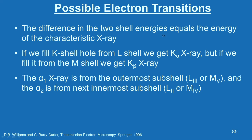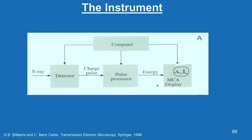The difference in the two shell energies equals the energy of the characteristic X-ray. If we fill a K shell hole from an L shell we get Kα X-ray; if we fill it from the M shell we get Kβ X-ray. The α1 X-ray is from the outermost sub-shell like L3 or M5, and α2 is from the next innermost sub-shell like L2 or M4. The instrument details: X-rays come in to the detector, producing a charge pulse fed into a pulse processor, then displayed as energy in an MCA, with everything controlled by the computer.